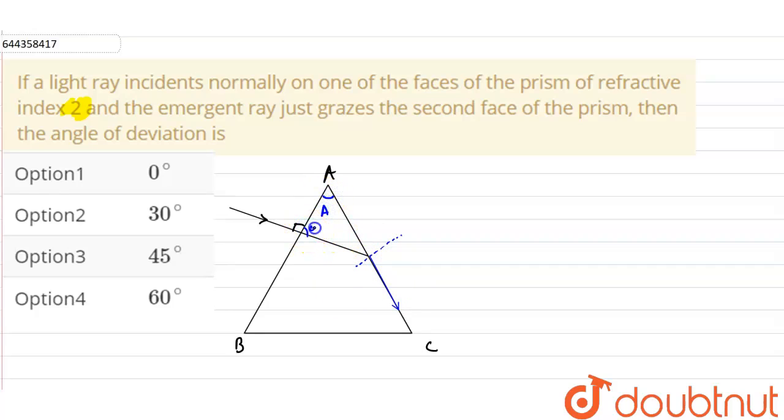This angle is 90 - A. Now the total angle over here is 90 degrees. So this angle is 90 degrees, therefore this angle will be equals to A.